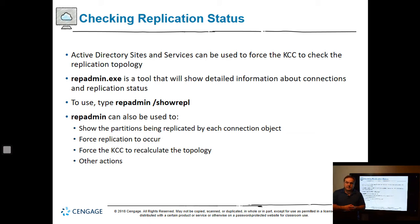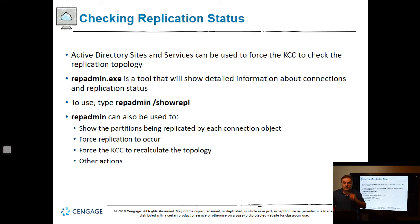Active Directory Sites and Services can be used to force the KCC to check the replication topology. Repadmin.exe is a tool that shows replication status — use 'repadmin /showrepl' to see the partitions being replicated. It can force replication to occur and force the KCC to recalculate the topology. If two domain controllers won't replicate properly, type 'repadmin /syncall' to force them to replicate right away.